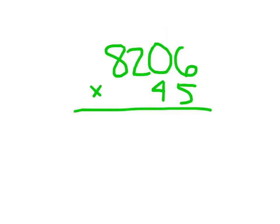Here we have a 4-digit number by a 2-digit number, meaning we will probably end up getting 6 digits as our answer. We'll start with the first step: 8,206 times 5. 5 times 6 is 30 — place the 0, regroup the 3. 5 times 0 is 0, plus 3 is 3. 5 times 2 is 10 — place the 0, regroup the 1. And then 5 times 8 which is 40, plus 1 which is 41.